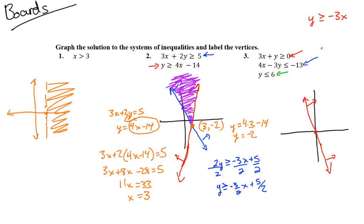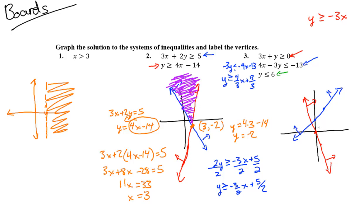The blue inequality: solving for y, we get -3y ≤ -4x - 13, and dividing by -3 flips the sign, giving y ≥ (4/3)x + 13/3. Y-intercept is 13/3, slope is 4/3 — a solid line, less steep. Since y ≥, we shade above. You can also verify by testing a point like (0,0) in the original inequality.